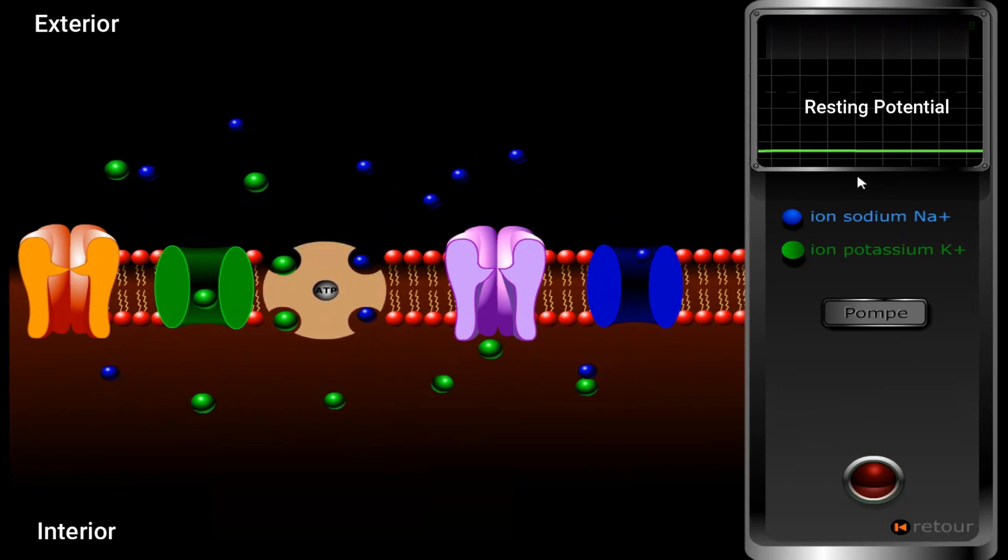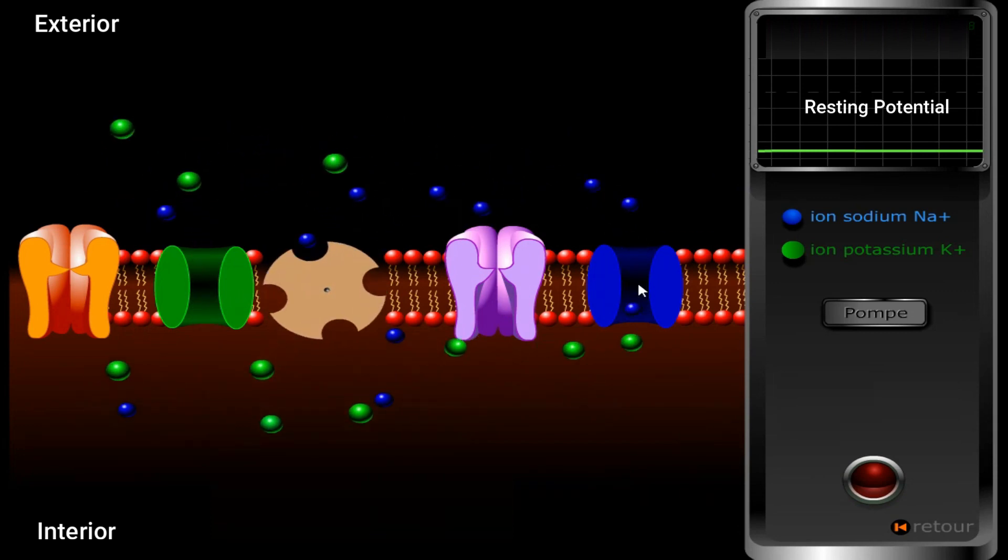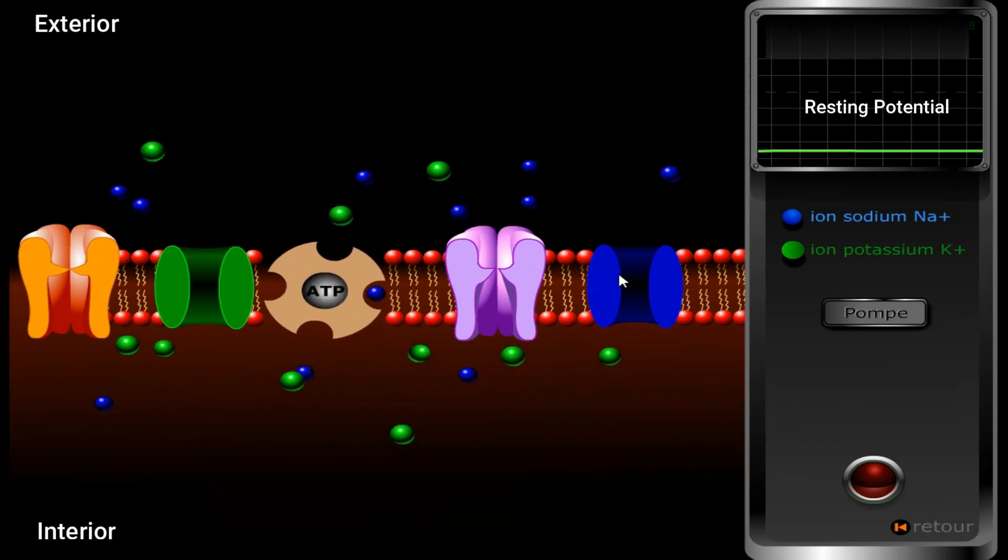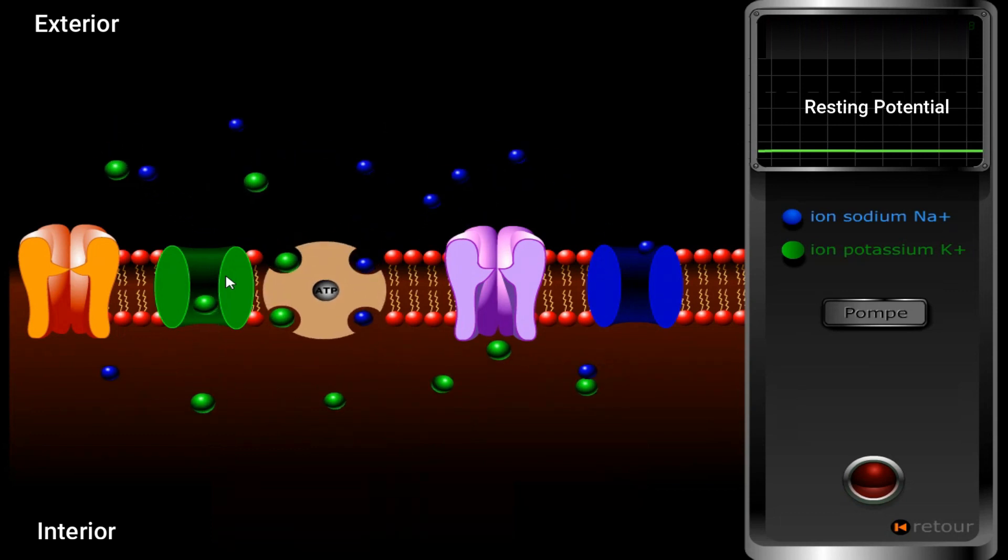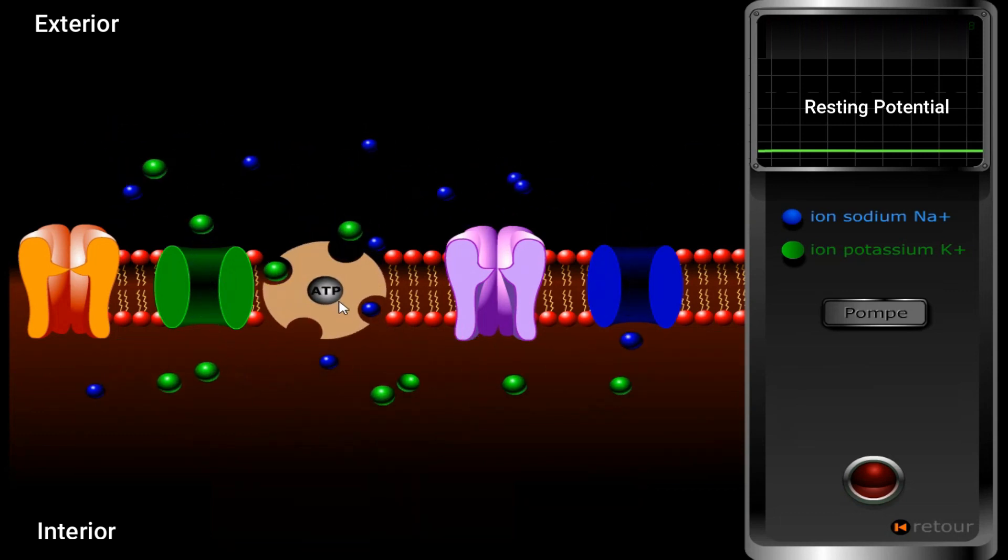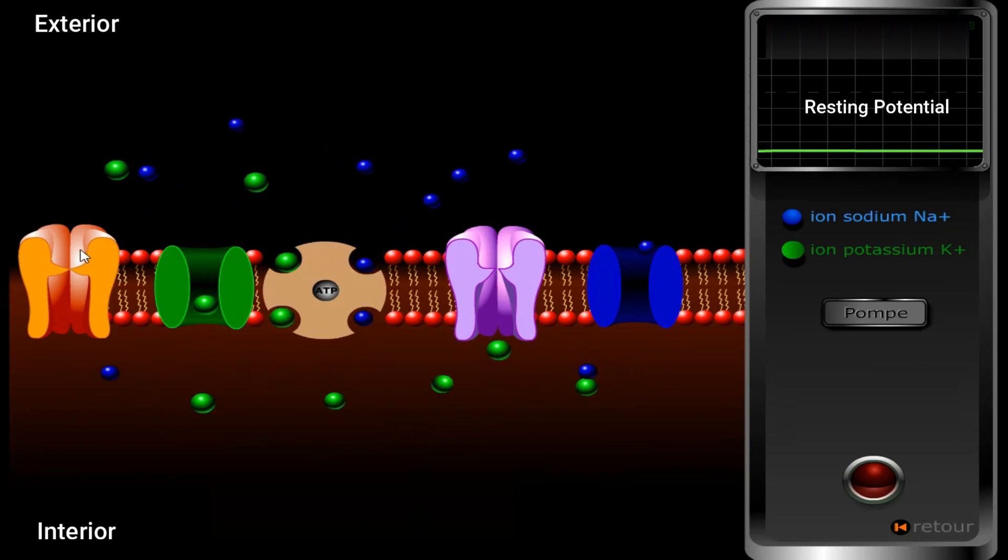As you see in resting state, the functional channels in the cell membrane are the non-voltage dependent Na+ channels and K+ non-voltage dependent channels, also the Na+ K+ pump. The other channels, the voltage dependent Na+ or K+ channels, are closed and non-functional.